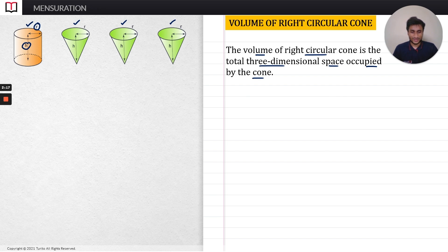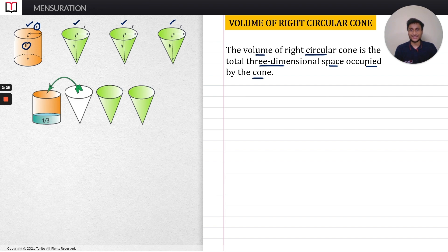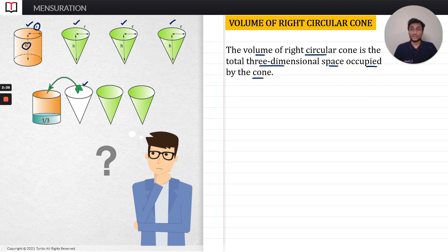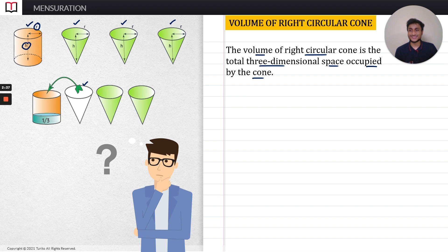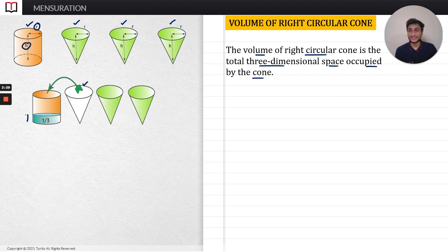After that, I am going to take one of the cones and pour all the water inside it into the cylinder. I am selecting this first cone and pouring all its water into the cylinder. The water will get filled exactly by one third of the total volume of the cylinder — interesting, right?